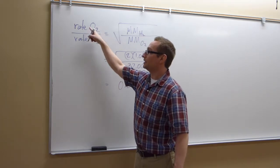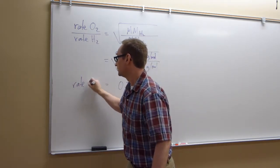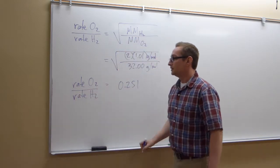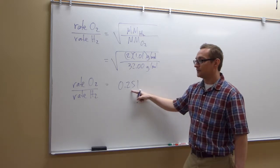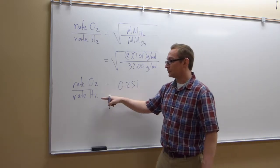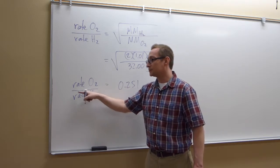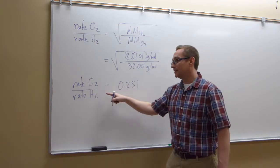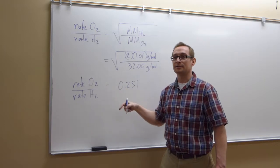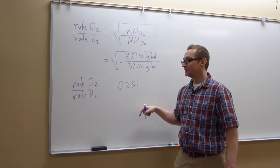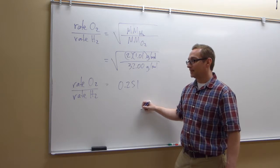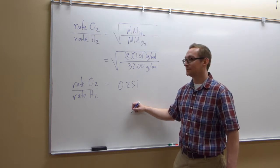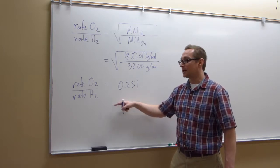Based on this number, if this ratio is only 0.251, does that mean that the rate of H2... Am I dividing by a larger number or a smaller number than the top? Larger. Yeah, larger number, right. Just mathematically, rate of H2 has to be bigger than rate of oxygen for this to be so small. So what this means is hydrogen effuses faster. All right, it's a lighter gas.